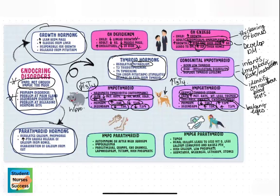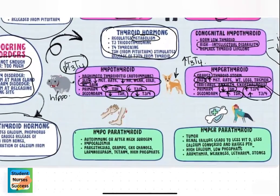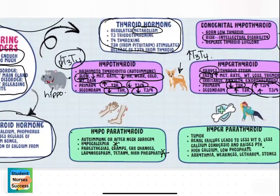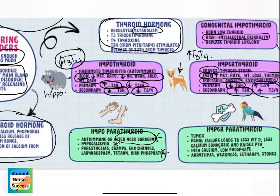Hypoparathyroidism results in low calcium levels and high phosphate levels. This is most frequently seen as the result of neck surgery or thyroid surgery where the parathyroid glands are disturbed, resulting in less parathyroid hormone and subsequently low calcium. It can also be seen in autoimmune disorders when the body attacks the parathyroid gland. Manifestations include paresthesias or tingling sensations, cramps, EKG changes or arrhythmias, tetany, and laryngospasm.